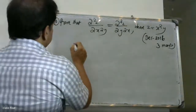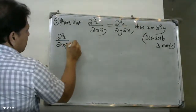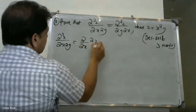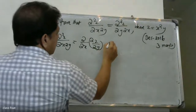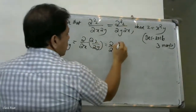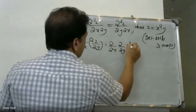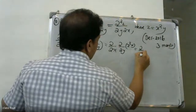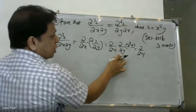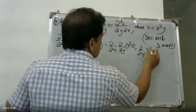Prove that dou square z by dou x dou y is equal to dou square z by dou y dou x, where z is equal to x square y. First step: dou square z by dou x into dou y — we write dou by dou y of dou z by dou x. So dou by dou y of dou z by dou x of x square y. Partial differentiate with respect to y: x square is constant, y is variable, giving x square into one, which is x square.